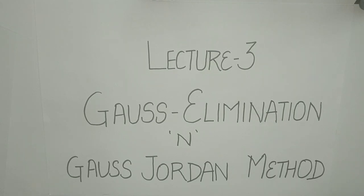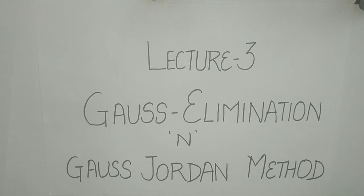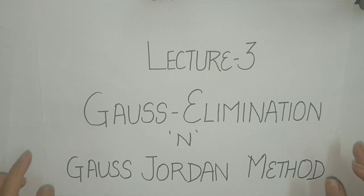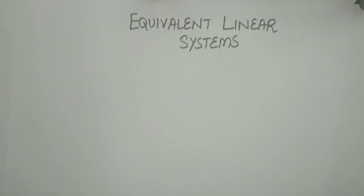Hi friends. Having known echelon form, reduced row echelon form, and matrix form of a system of linear equations, we now move on to discuss solution methodology of a system of linear equations. The two methods we will elaborate in this video are Gauss elimination and Gauss-Jordan method. Both of these methods aim at reducing the given system to an equivalent linear system by applying elementary row operations. Let us see what equivalent linear systems are.